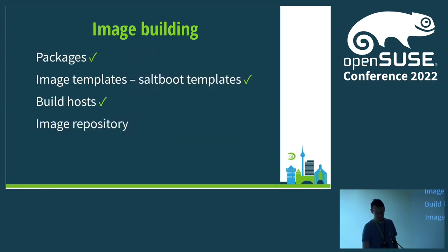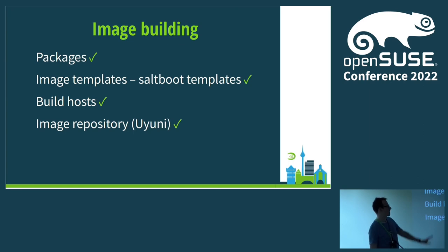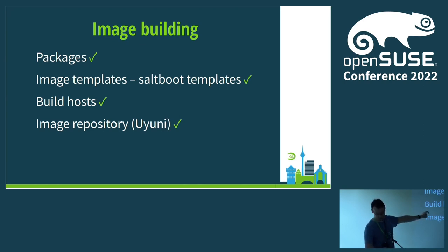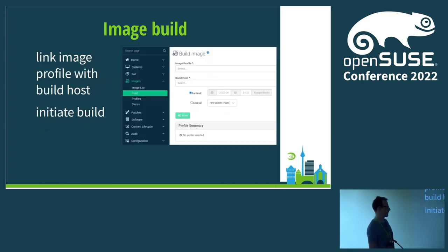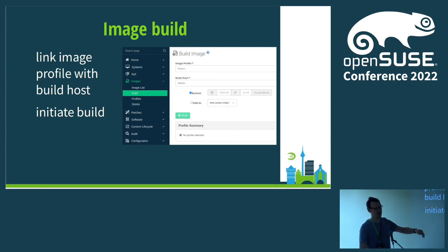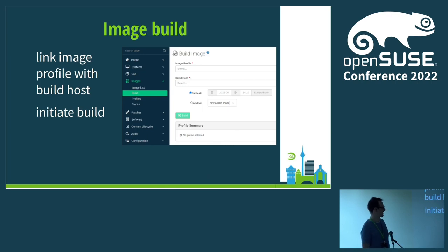The last part is the image repository — which is Uyuni itself. We have synchronized channels, created image profiles, and have a build host. We can trigger the build: in the UI you select the profile and the build host — since you may have multiple with different architectures or OSes — and wait until the image is built.